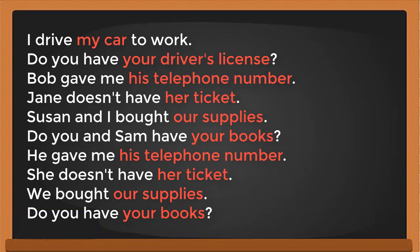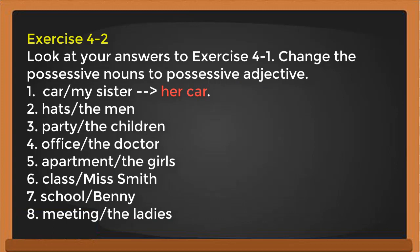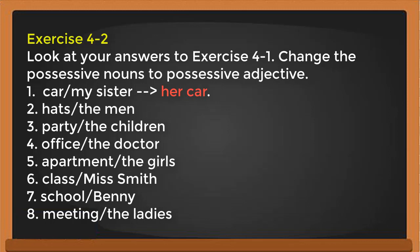Now let's look at Exercise 2. Look at your answers from Exercise 1 and change the possessive nouns to possessive adjectives. For example: car / my sister — the possessive noun is 'my sister's car,' but for the possessive adjective it becomes 'her car,' because 'my sister' is she, so you change she to her.